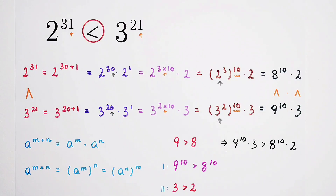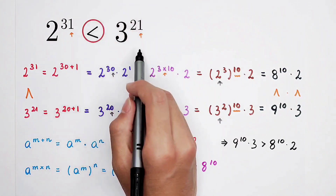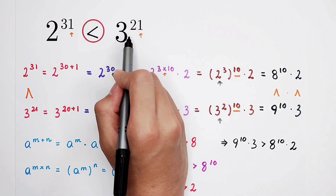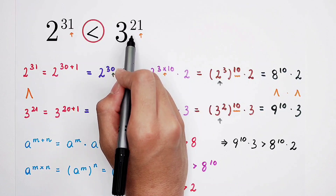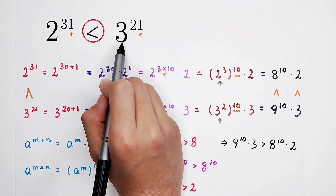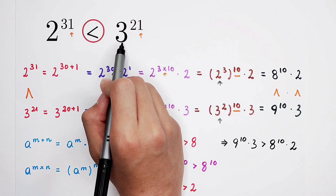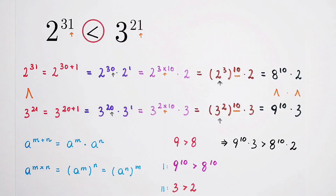What a surprising answer! Although the exponent on the right-hand side is much smaller, it has the bigger value. Give me a thumbs up, subscribe for more videos, and we'll see you next time. Bye-bye!